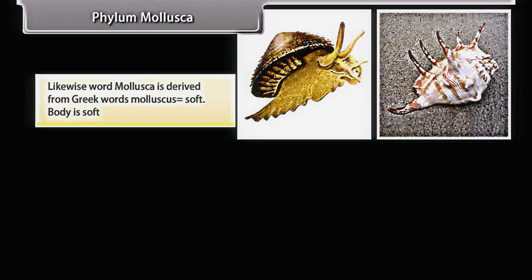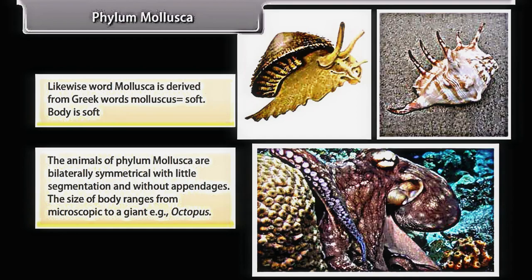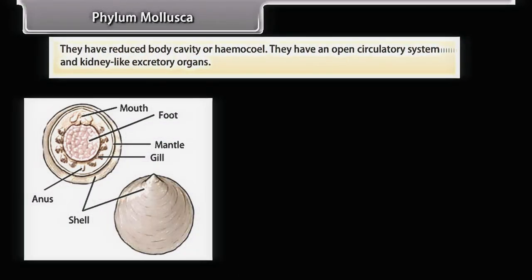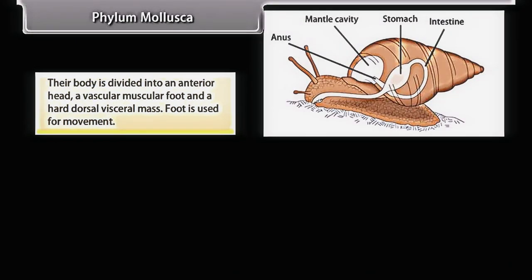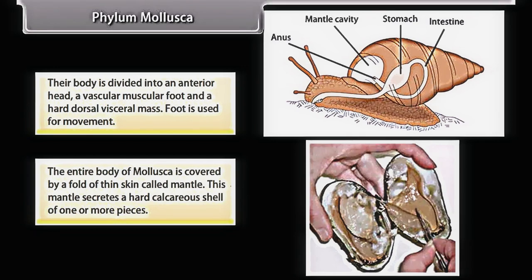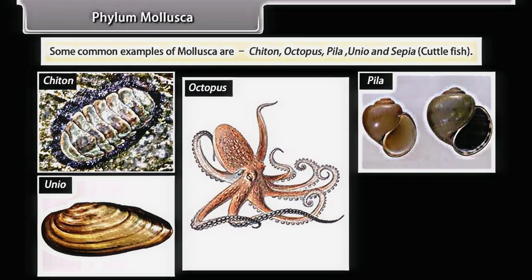The word Mollusca is derived from Greek 'molluscas' (soft) — the body is soft. The animals of Phylum Mollusca are bilaterally symmetrical with little segmentation and without appendages. Size ranges from microscopic to giant (e.g., octopus). They have a reduced body cavity or hemocoel and an open circulatory system with kidney-like excretory organs. The body is divided into an anterior head, a vascular muscular foot, and a hard dorsal visceral mass. The entire body is covered by a fold of thin skin called the mantle, which secretes a hard calcareous shell. Common examples are Chiton, Octopus, Pila, Unio, and Sepia (cuttlefish).